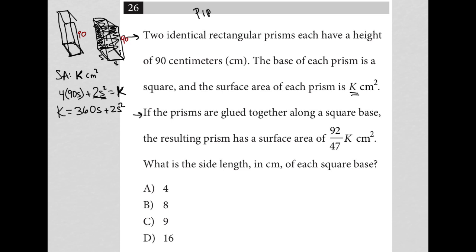Next sentence says if the prisms are glued together along a square base. Okay, so that means I'm going to have a longer prism. And I'm going to have a height now that's 180 centimeters. And then my surface area will change because now I have 4 times 180s. But I still have plus 2s squared, right? Because I'm going to lose two surfaces.